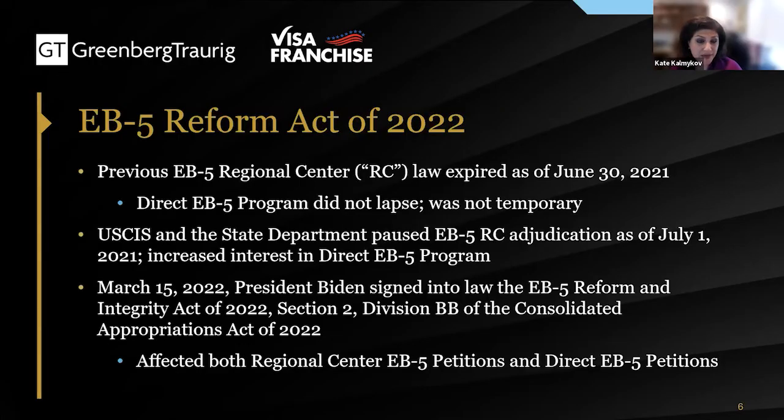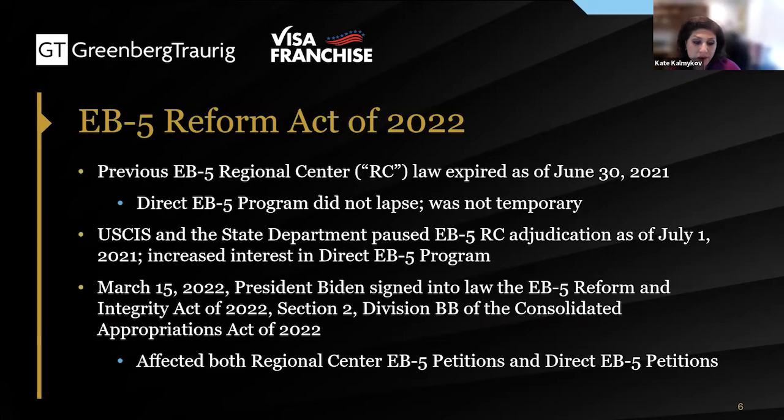The previous EB-5 regional center law expired and caused a pause in the regional center program. This did not happen to anybody applying through the direct program because the direct is permanent in the law. We've seen a big increase in people wanting to file direct EB-5 petitions because they were unsure of when the regional center would be reauthorized — it took nine months. The program was reauthorized by President Biden on March 15th of this year, and as part of that reauthorization, there were changes that impacted both regional center and direct applicants.